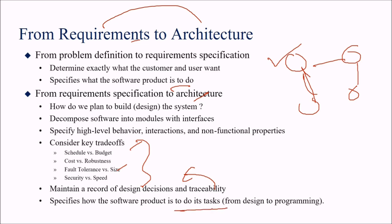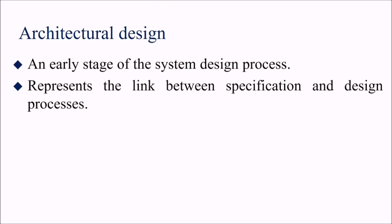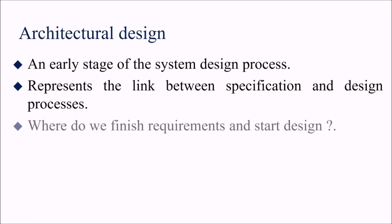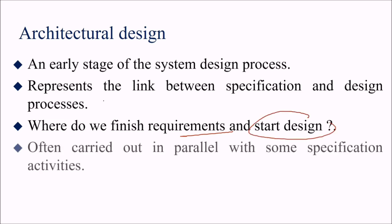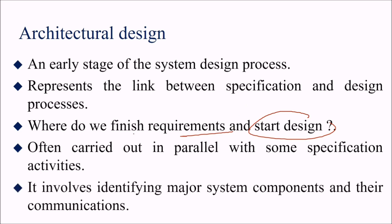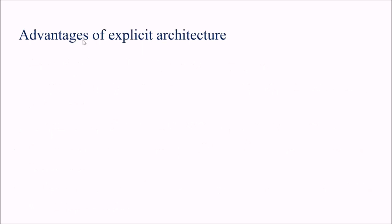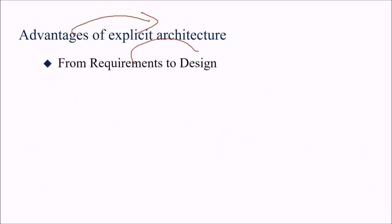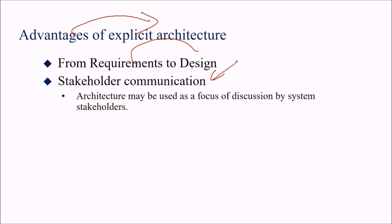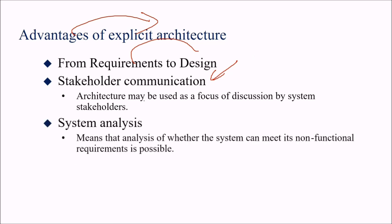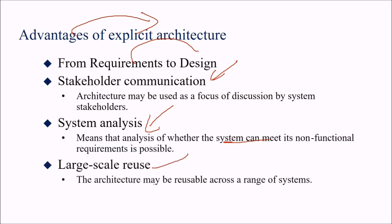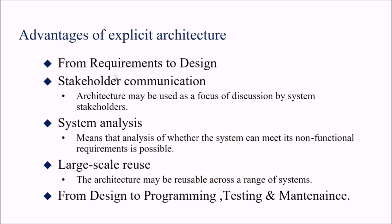Architectural design is the early stage of the system design process, representing the link between specification and design. It is often carried out in parallel with some specification activities, identifying major system components and their communication. The advantages of explicit architecture include: serving as a focus of discussion for stakeholders, enabling analysis of whether the system will meet non-functional requirements, supporting large-scale reuse across systems, and facilitating design to programming, testing, and maintenance.